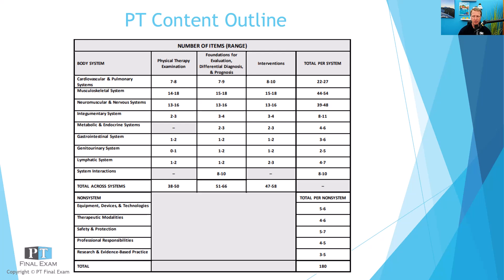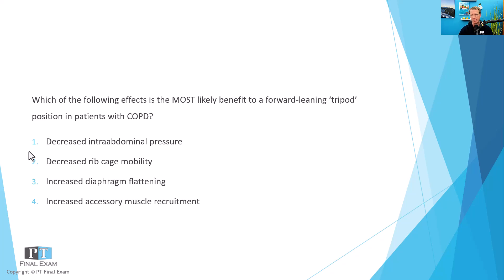Alright, let's talk through our practice question. I'll read it to you, give you a moment to respond, and then we'll discuss it together. Which of the following effects is the most likely benefit to a forward-leaning tripod position in patients with COPD? Answer choices: 1. Decreased intra-abdominal pressure. 2. Decreased ribcage mobility. 3. Increased diaphragm flattening. Or 4. Increased accessory muscle recruitment.